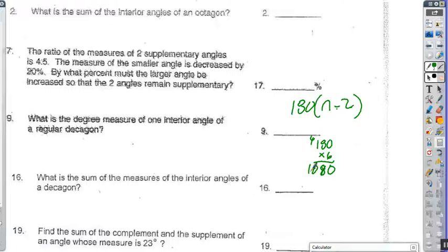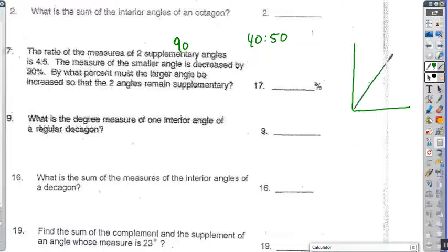The ratio of the measures of two supplementary angles is 4 to 5. That is an interesting question. So we have two angles that are supplementary by a ratio of 4 to 5. Supplementary means together they equal 90. They have a sum of 90. If the angles have a ratio of 4 to 5, that means we have 40, 50 degree angle measurements. This is going to be 50, this is going to be 40.